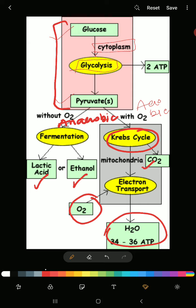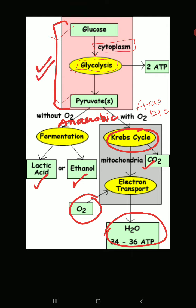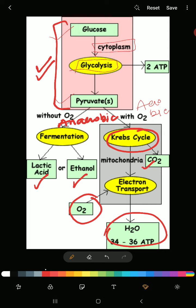Glycolysis does not involve oxygen — it is common to both aerobic and anaerobic organisms. Important exam point: glycolysis is the process that is both anaerobic and aerobic, meaning both types use it. In the aerobic case, glycolysis is followed by the Krebs cycle; in the anaerobic case, pyruvic acid is broken down by fermentation into lactic acid or ethanol.